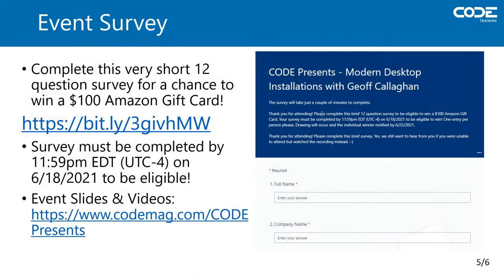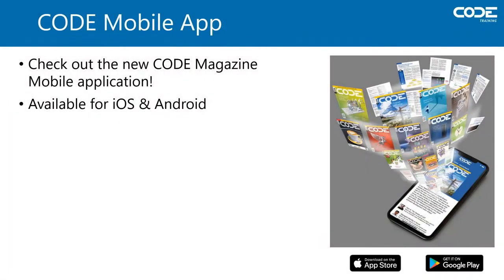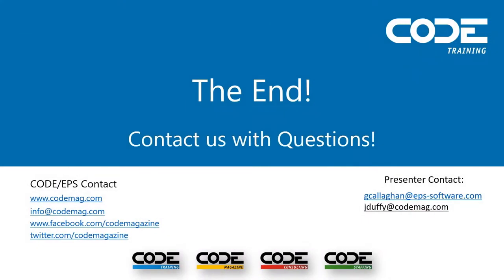Great job, Jeff. Well, that just about wraps up this webinar. Don't forget to fill out the event survey to be eligible for the $100 Amazon gift card. Make sure you complete the survey by Friday at 11:59 PM Eastern Time. Schedule your hour of code and get free help from our team of expert developers. Our Code Magazine mobile app is available on Android and iOS. Our next State of .NET webinar is Wednesday, June 30th at 1 PM Eastern, and it will cover .NET 5 and a .NET 6 preview — you're not going to want to miss it. Jeff, myself, and the members of the Code family hope you found this helpful and are excited about deploying your application on Windows. Members of the Code team will stick around in the chat window answering any questions you may have. Thanks again for joining us today.